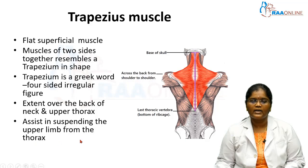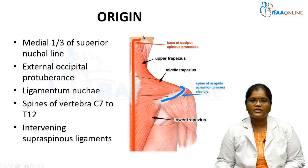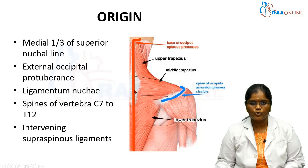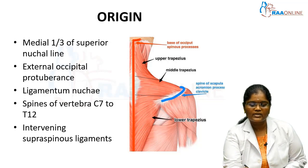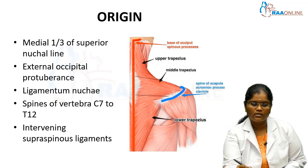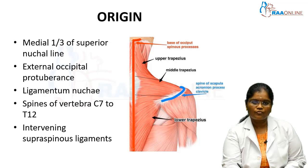The trapezius muscle takes its origin from the medial one-third of the superior nuchal line, the external occipital protuberance, the ligamentum nuchae, and the spinous processes of C7 to T12 vertebrae, as well as the intervening supraspinous ligament. In the diagram, the origin from the superior nuchal line is shown, the red line represents attachment to the ligamentum nuchae in the neck, and beyond this is the origin from the spinous processes.